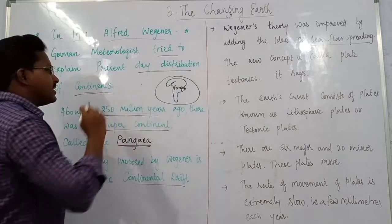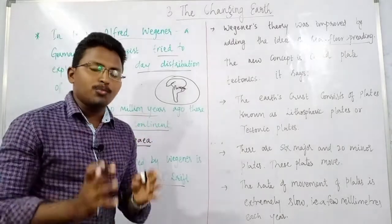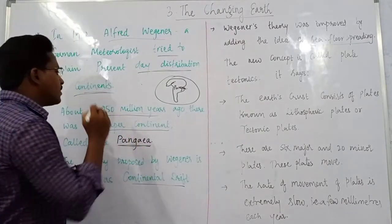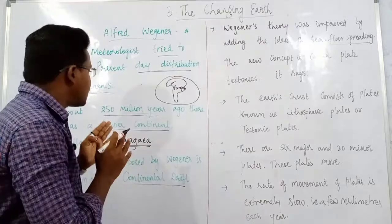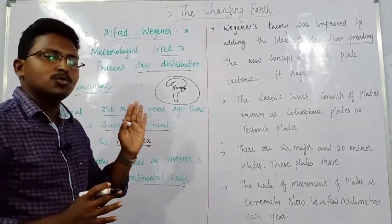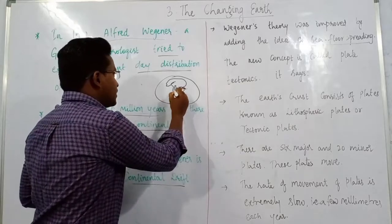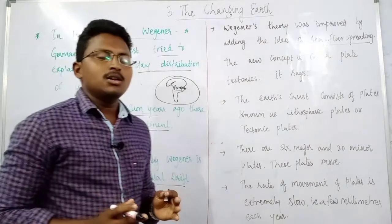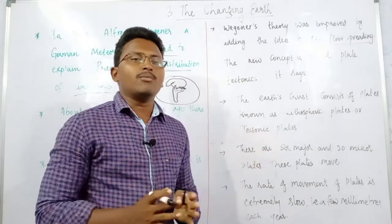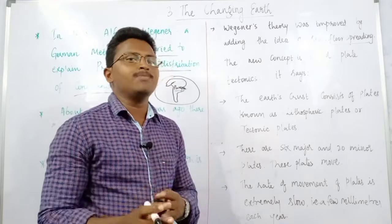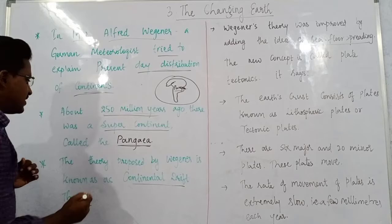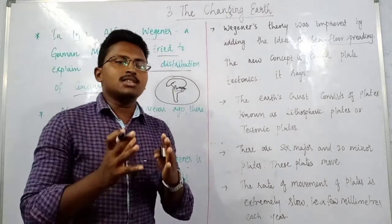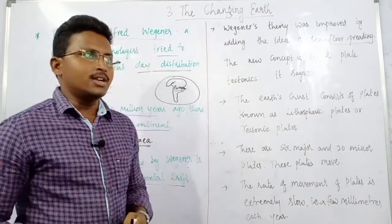According to Alfred Wegener, about 250 million years ago there was one and only one super continent on this Earth. He named that super continent Pangaea. This super continent later slowly divided and separated into different continents. The name of the theory he proposed is called the Continental Drift Theory.